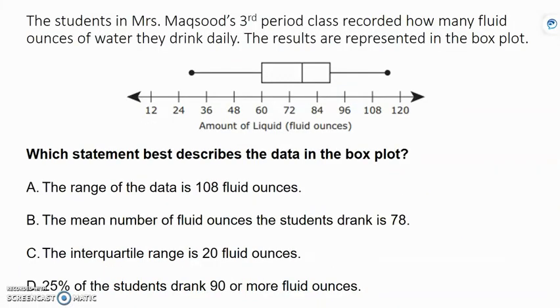Let's go ahead and look at one more box plot. The students in Ms. Maxout's third period class recorded how many fluid ounces of water they drink daily. The results are represented in the box plot. Be very careful on this box plot because it's not going by ones. Which statement best describes the data in the box plot? The range of the data is 108 fluid ounces. Okay, remember, range is the largest number minus the smallest number. But our numbers fall between two. So be very careful. The number that falls between 24 and 36 is 30. I can figure that out by adding those two together and dividing by 2. And the number that falls between 108 and 120 is 114. If I subtract those two, I get 84 fluid ounces. So A is not correct.